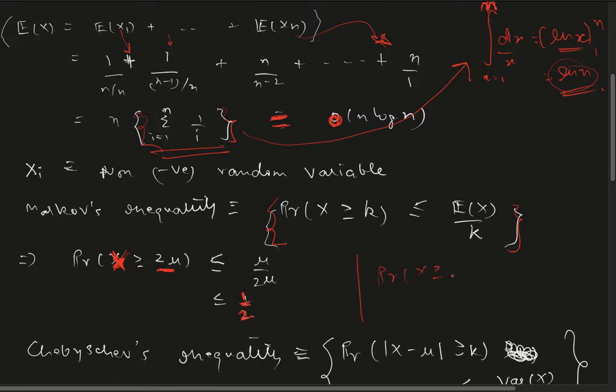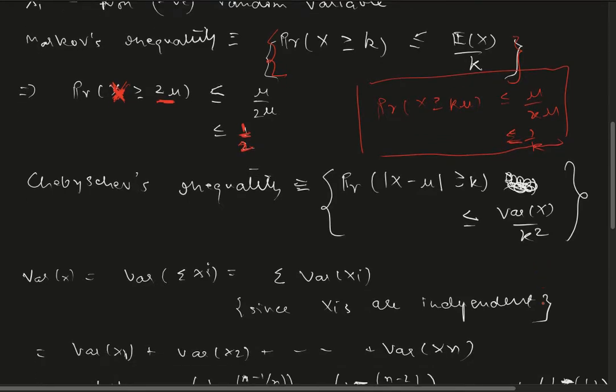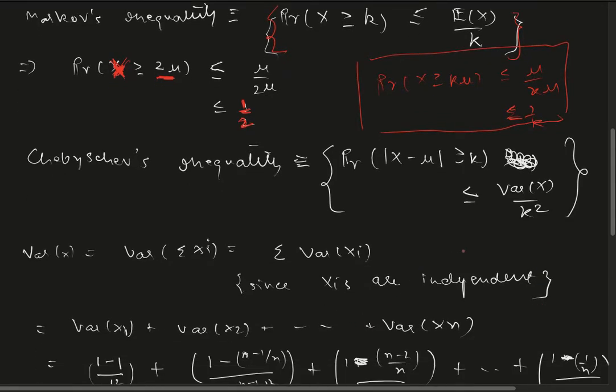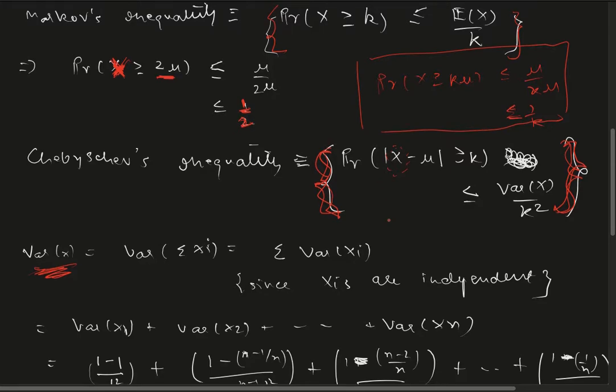We can construct other probabilities as well. To analyze how the variance of this distribution looks like, we use Chebyshev's inequality to analyze how probable the deviation of X from the mean is.